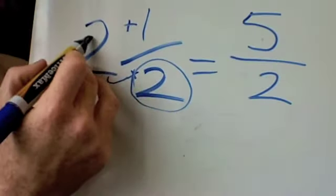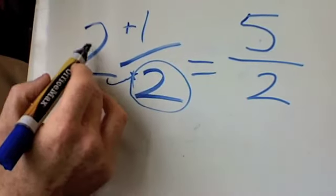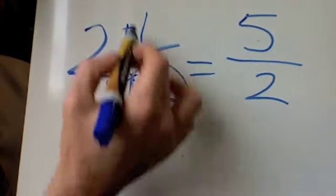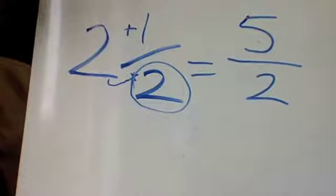Once again, take the full number, times it by the denominator, 2 times 2 plus 1 at the top. 2 times 2 is 4, plus 1 is 5 over 2.